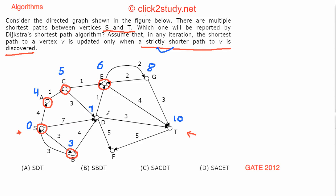Now among the unfinalized vertices with distances 7, 8, and 10, we finalize D at distance 7. From D we check for updates: going to E gives 7 + 1 = 8, which is not better than 6; going to T gives 7 + 3 = 10, which is not strictly shorter than the existing 10, so we don't update T. We can also reach another vertex at 7 + 5 = 12.